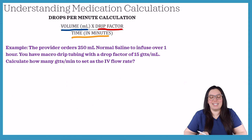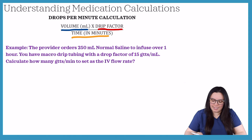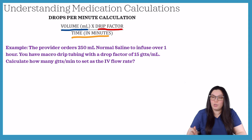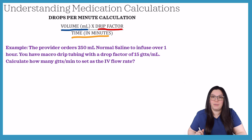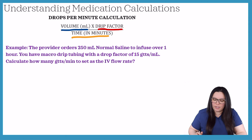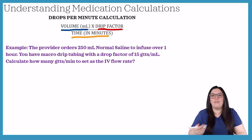The next example states: the provider orders 250 mL normal saline to infuse over one hour. You have a macrodrip tubing with a drop factor of 15. Calculate how many drops per minute to set as the IV flow rate.